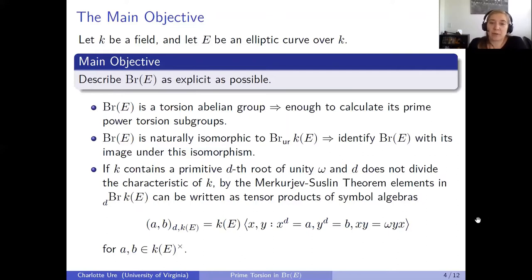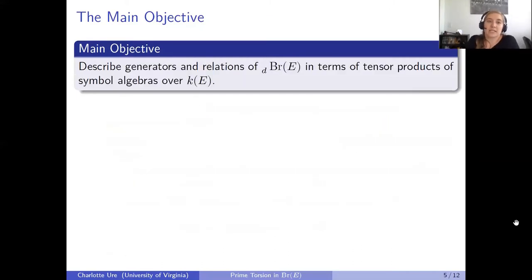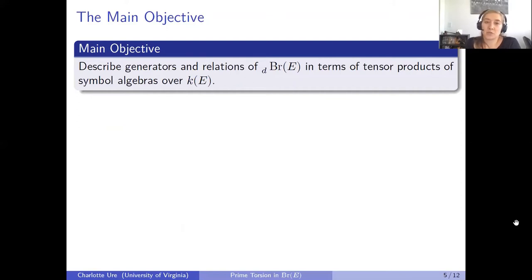Recall that the Hamilton quaternions are the free algebra over ℝ with two generators x and y such that x² = −1, y² = −1, and xy = −yx. This is exactly the symbol algebra for d = 2 with ω = −1. So my main objective becomes: describe generators and relations of the d-torsion of the Brauer group of E in terms of tensor products of symbol algebras over the function field k(E).